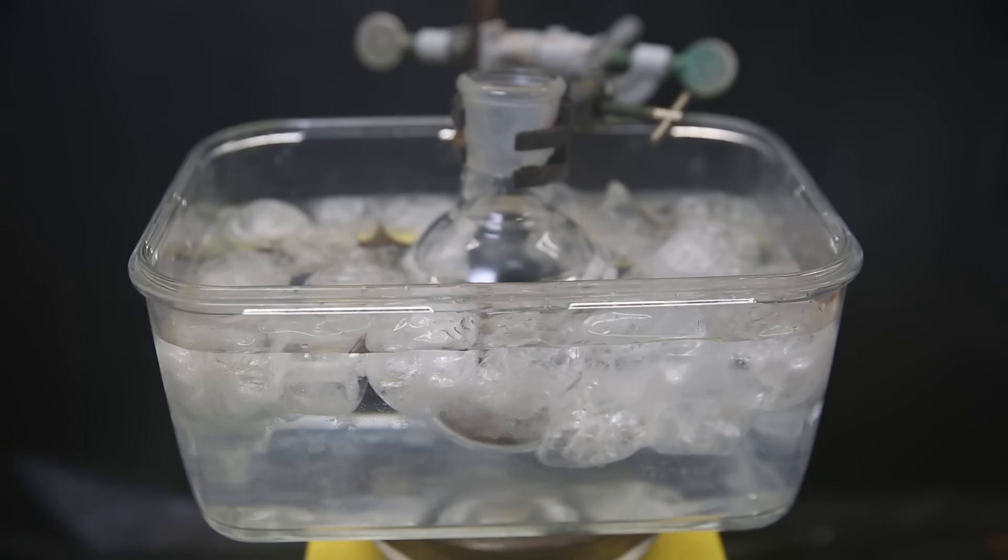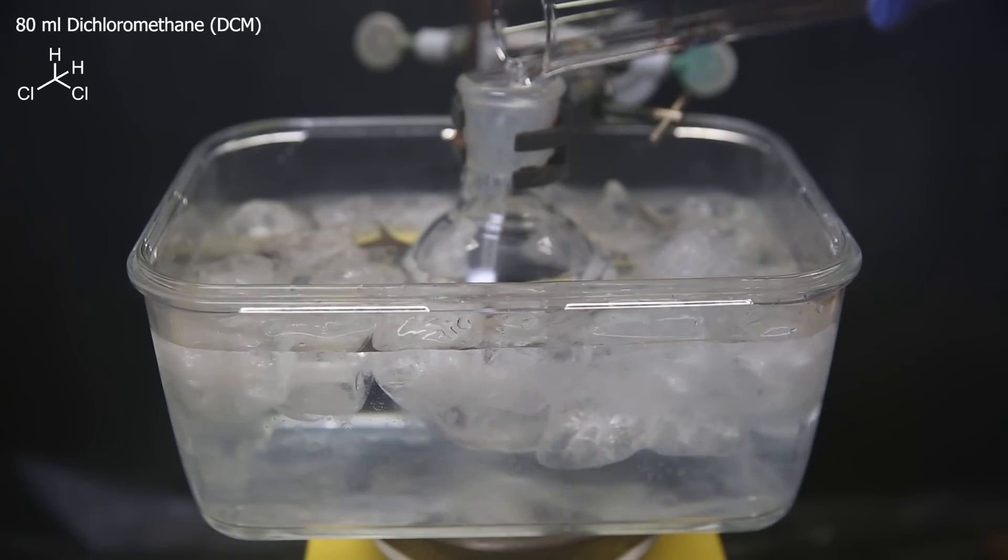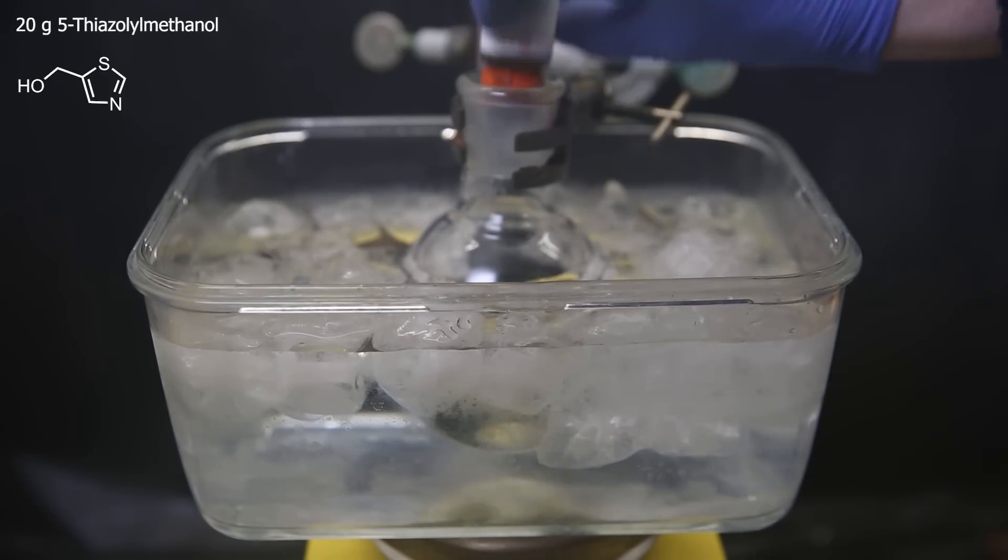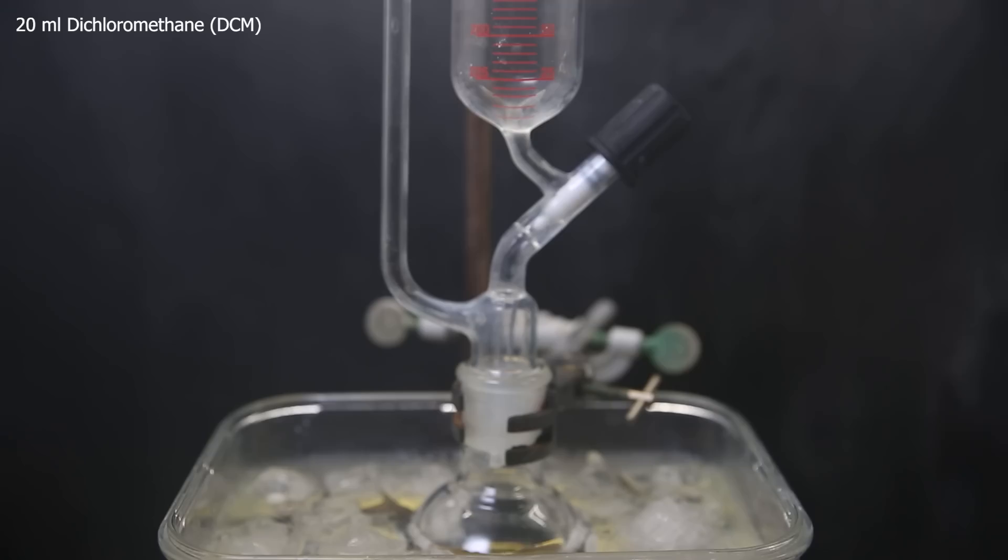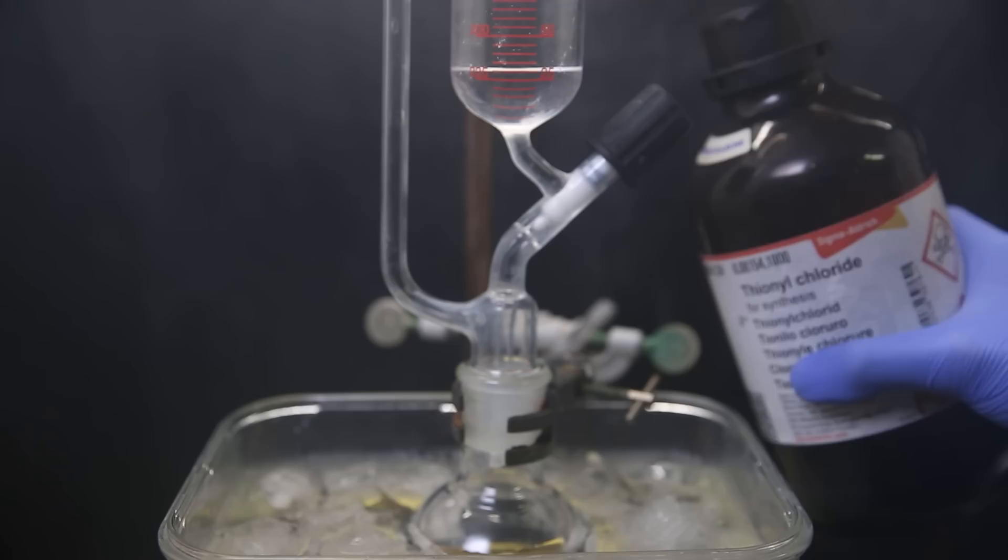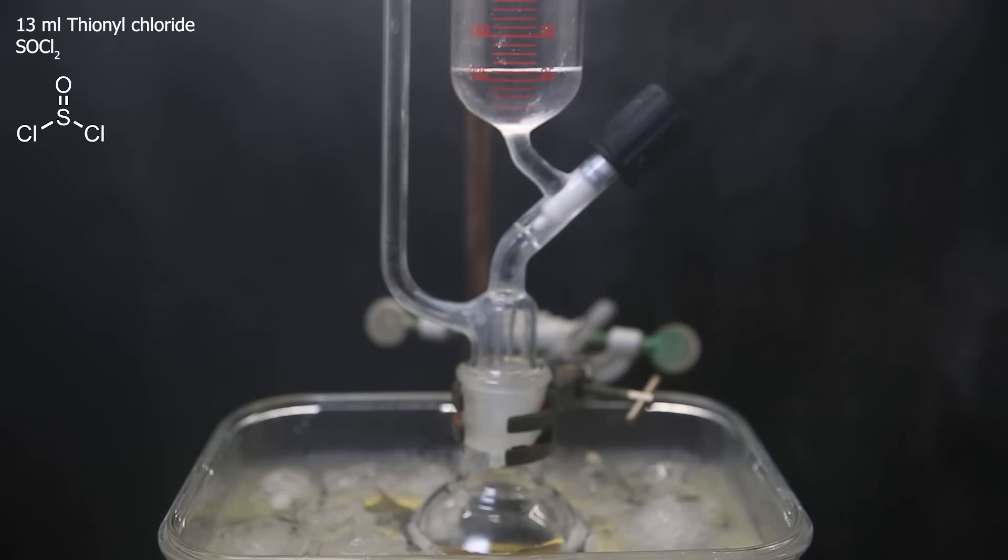For that, I set up a new flask in an ice bath and first add in 80 mls of dichloromethane as a solvent. I then pour in 20 grams of this thiazol reagent, which are two full small bottles. I attach a dropping funnel in which I first add 20 mls of dichloromethane as a diluent, and then it is time to whip out the big bottle of thionyl chloride, of which I add a humble 13 mls into the dropping funnel.